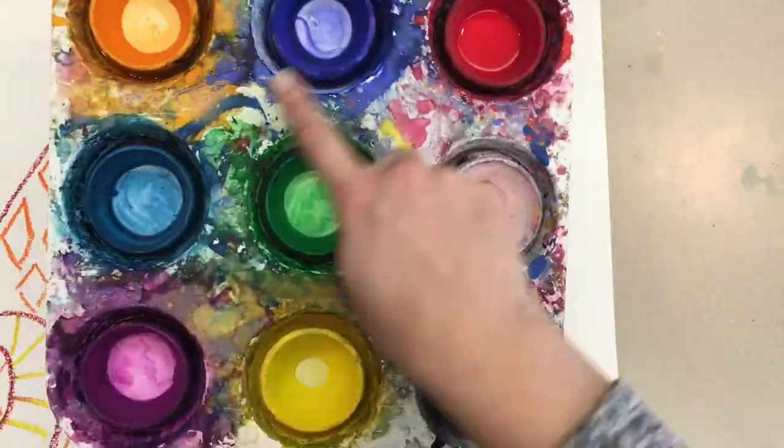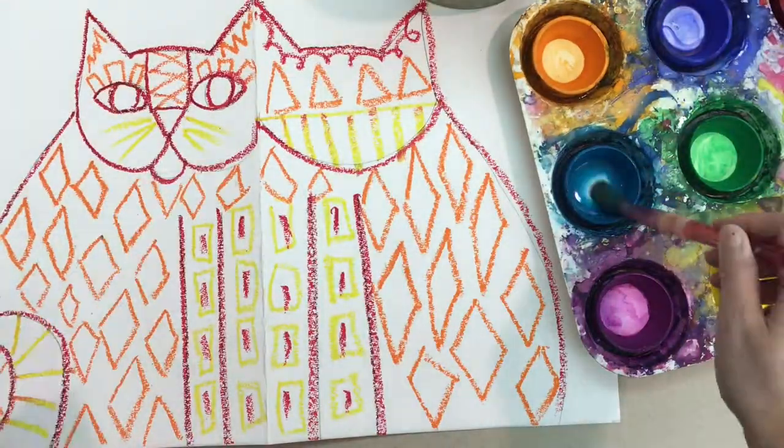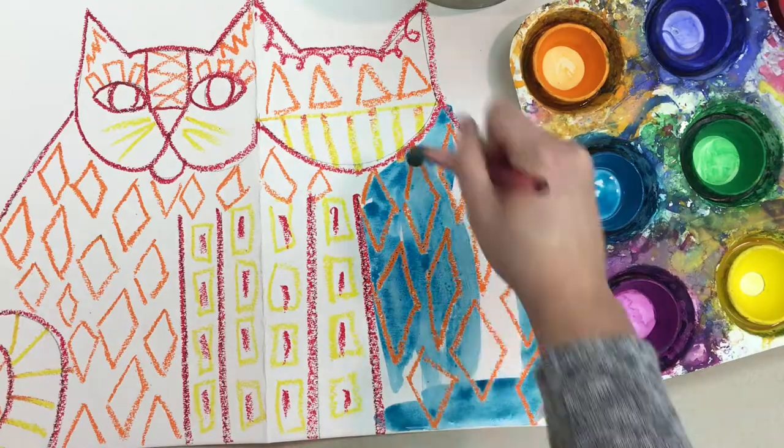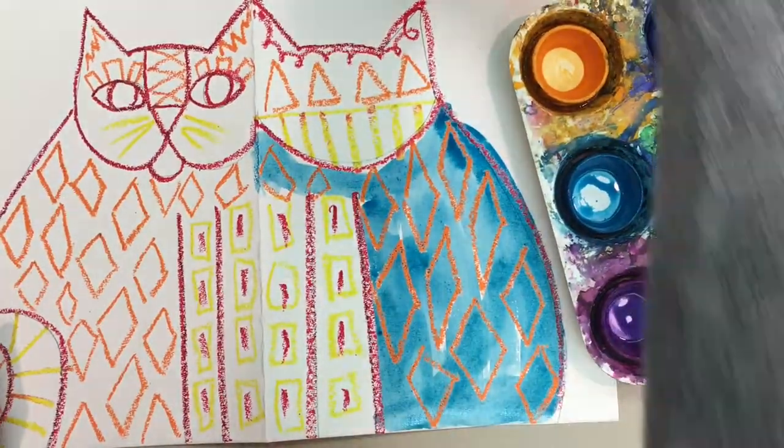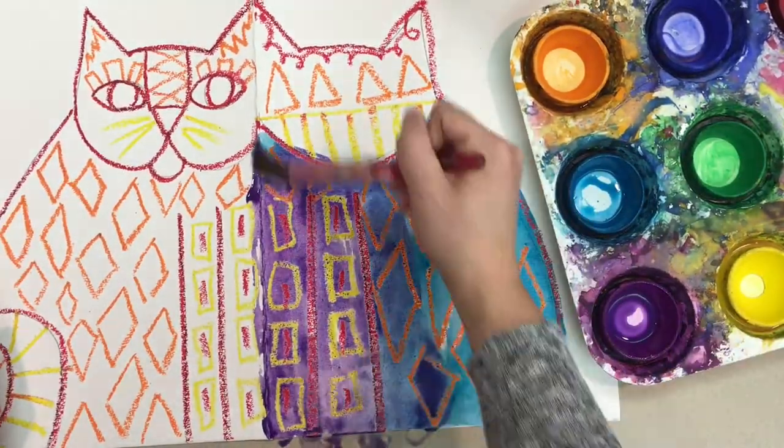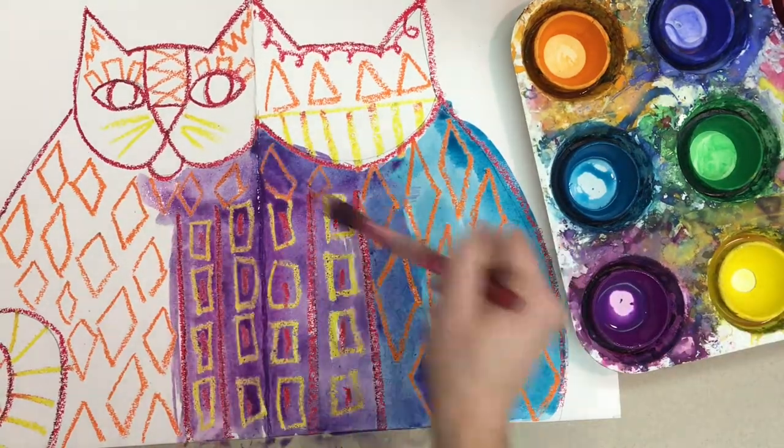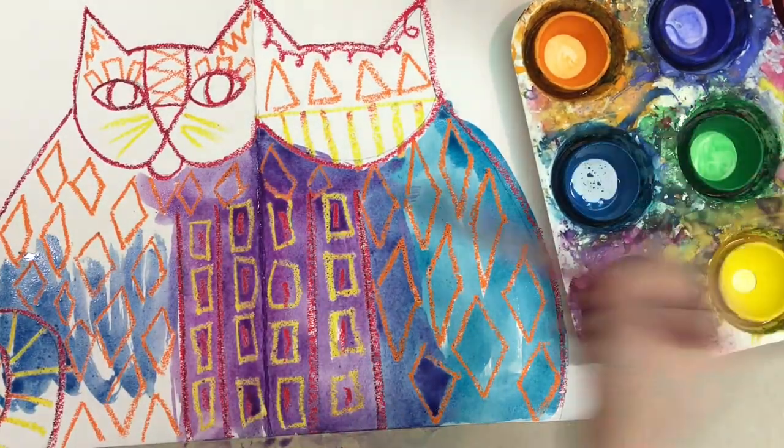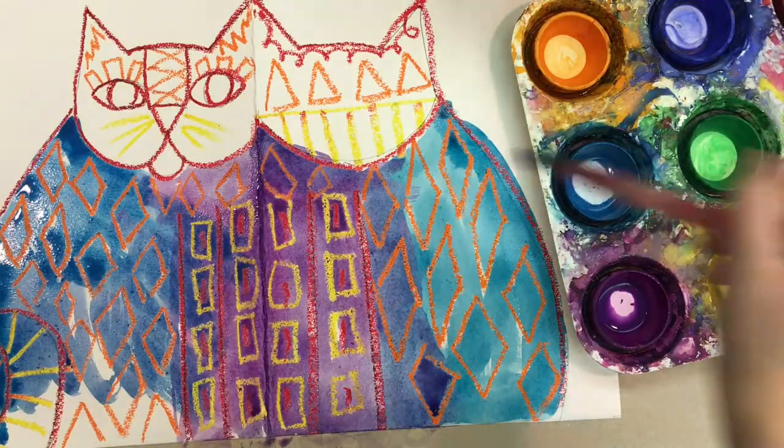After the oil pastels it's time to paint. I'm going to be using the cool colors. Since I used warm colors in the oil pastels, cool colors will now be used when I paint. I'm using blue, purple, and green, the three cool colors.